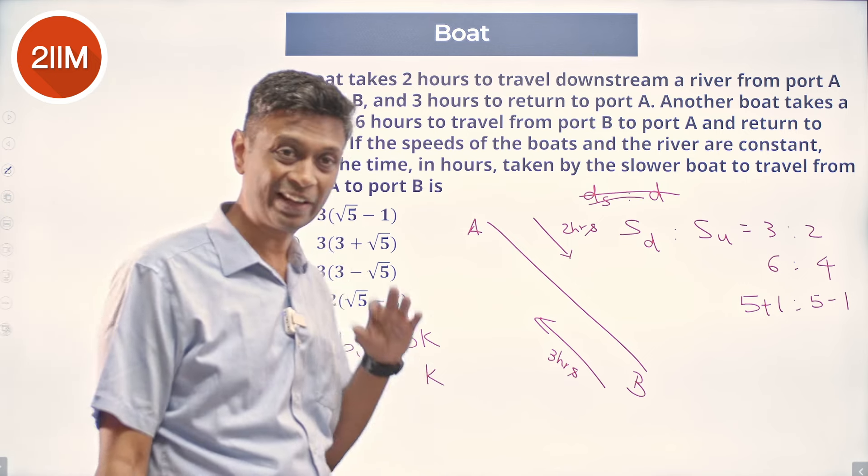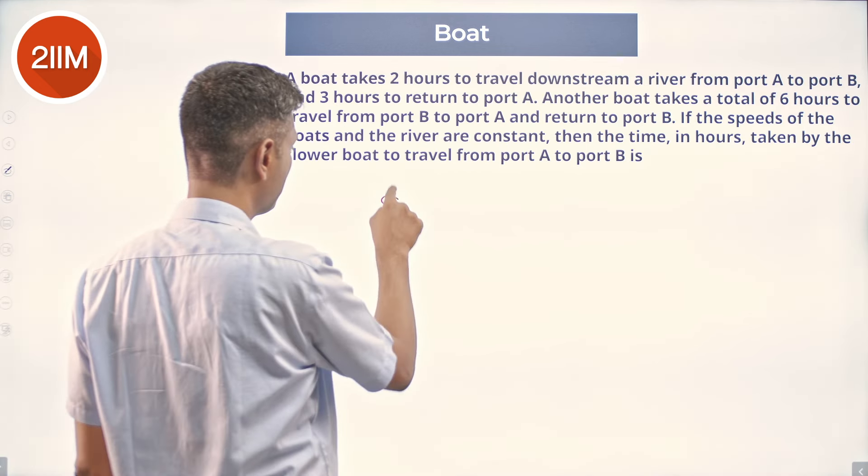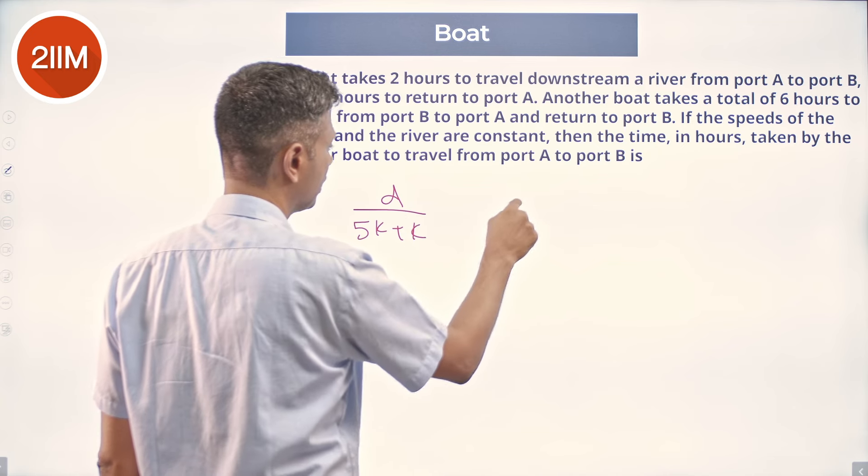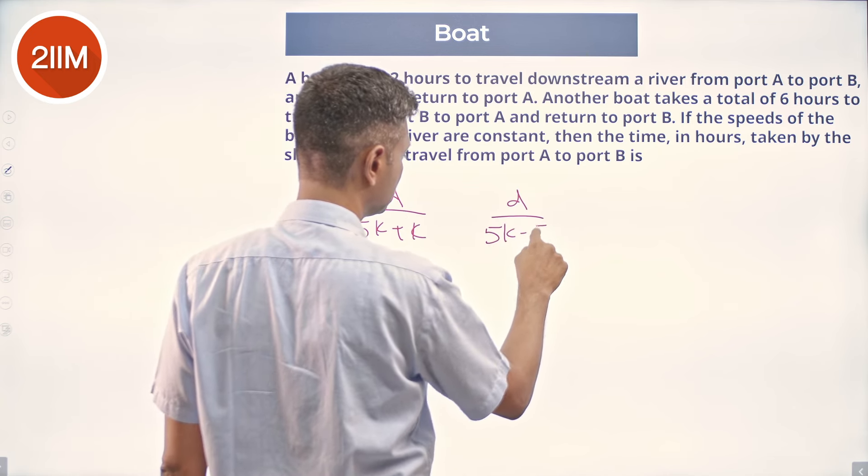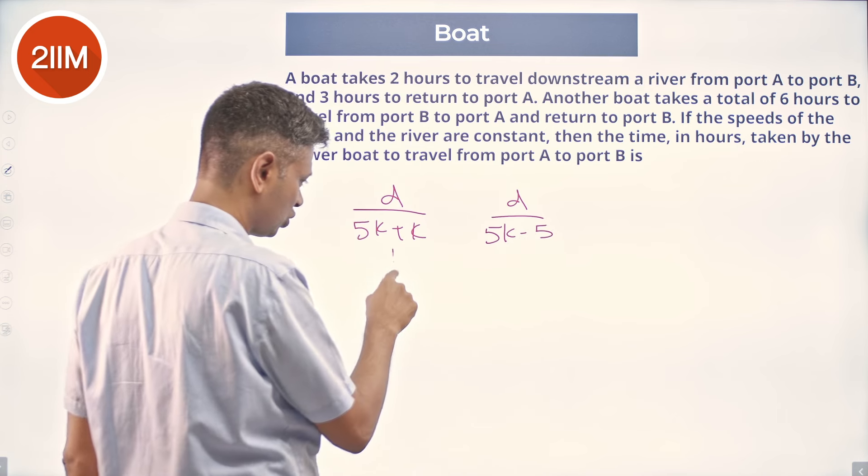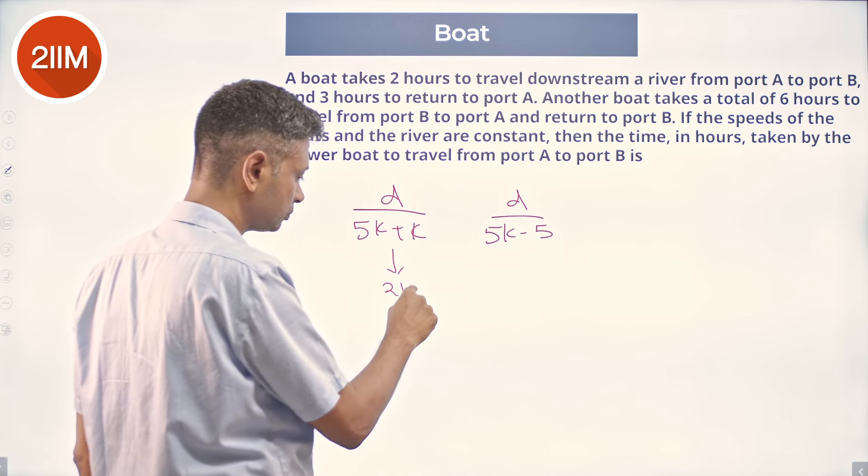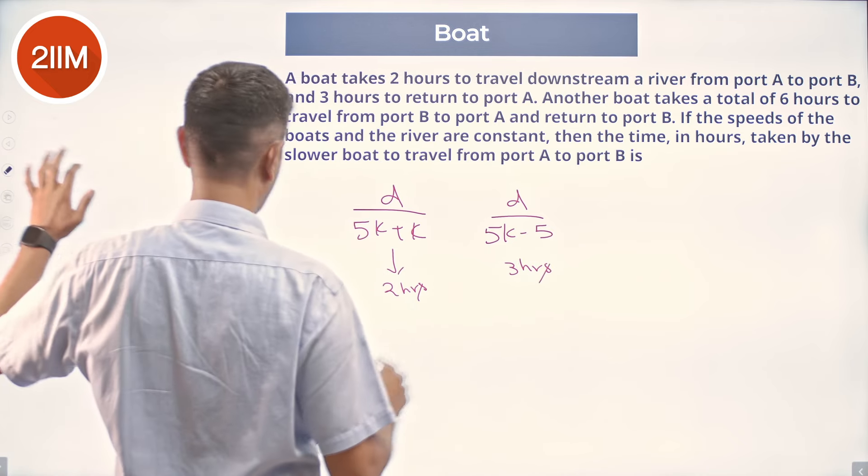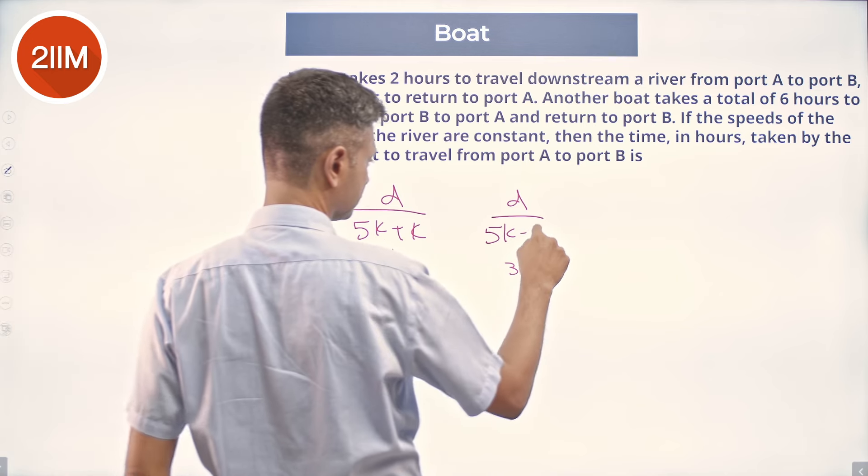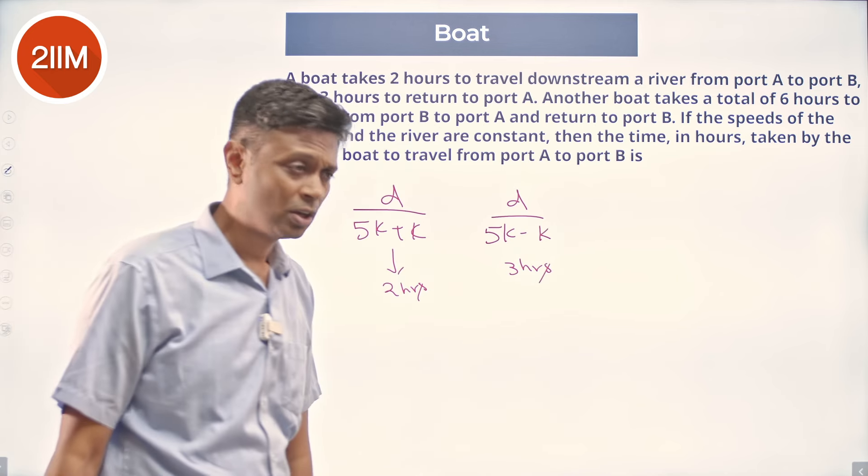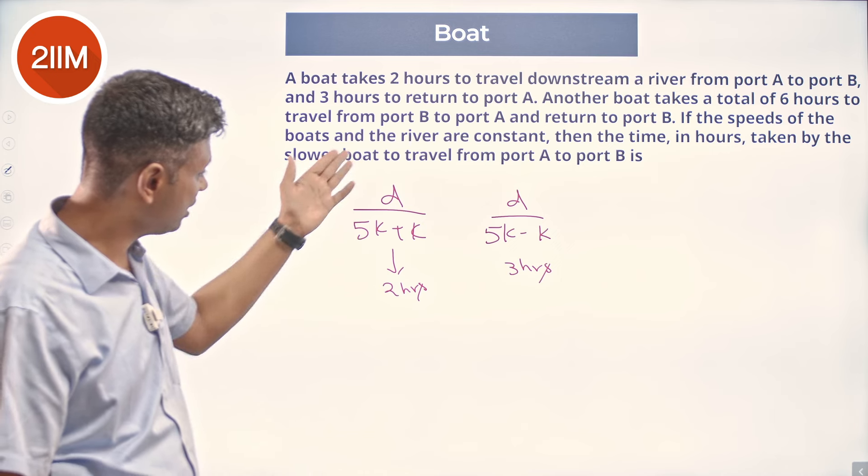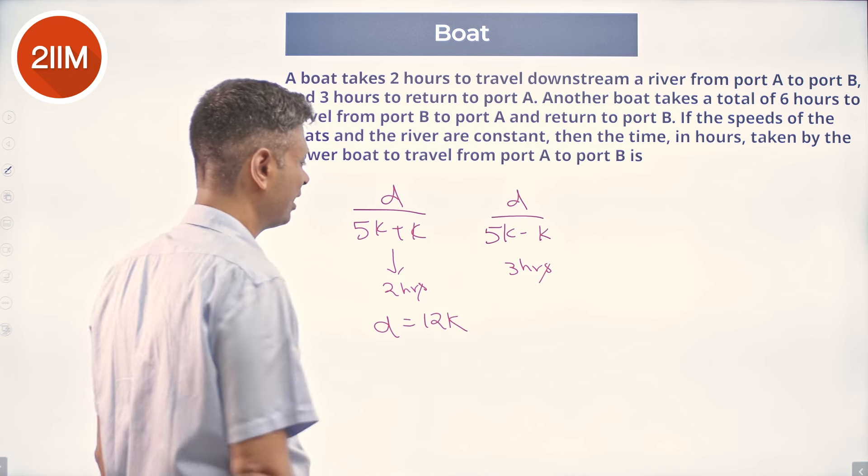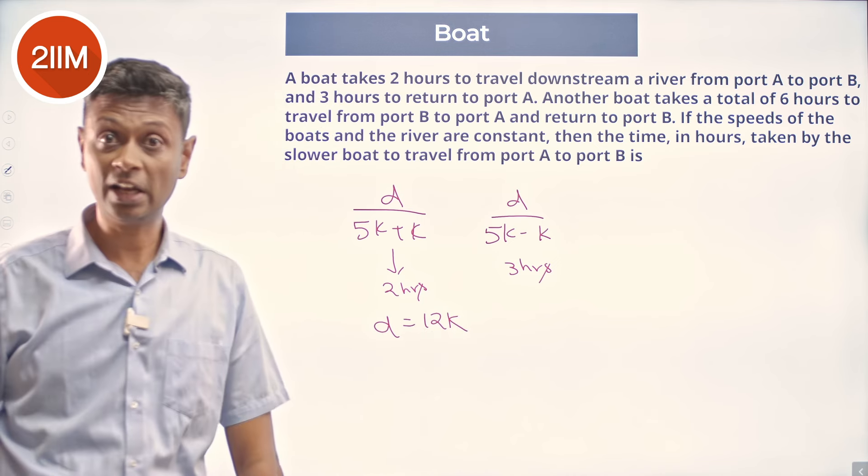The distance between these two is D, then D by 5K plus K, D by 5K minus K. These are the times taken. This is 2 hours. This is 3 hours. So, D by 6K is 2 hours. D is equal to 12K. 12K by 6K is 2 hours. 12K by 4K is 3 hours.